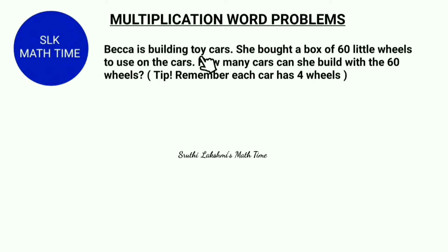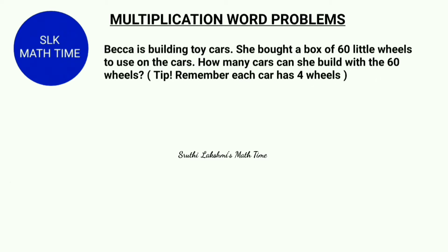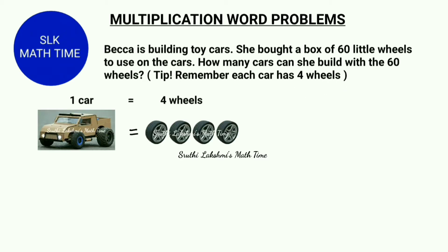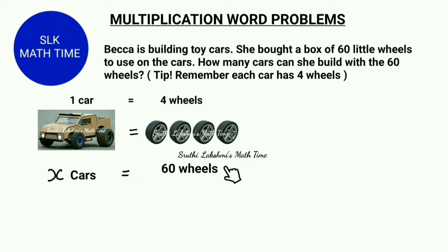Becca is building toy cars. She bought a box of 60 little wheels to use on the cars. How many cars can she build with the 60 wheels? Remember that each car has 4 wheels. So 1 car has 4 wheels, and we have to find x cars equal to 60 wheels.